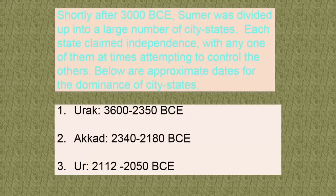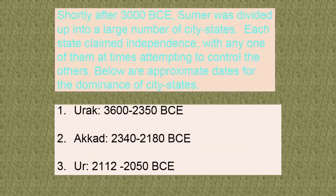Just after 3,000 BCE, Sumer gets divided into city-states. What's a city-state? A city-state is a city surrounded by walls. It's autonomous — it has its own lands, its own king — and each city-state is separate from another. It's not like an empire where they all rule together; they are in conflict with one another, each striving to be dominant. When you look at Uruk, Akkad, and Ur, all three existed together during that time, but at different times one was dominant over the others. They're walled cities, each with its own standing army, its own source of income, and at one time or another a stronger or weaker ruler.